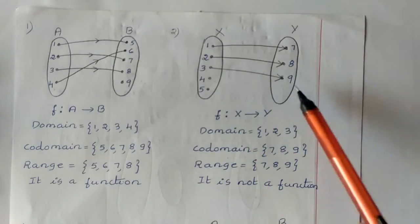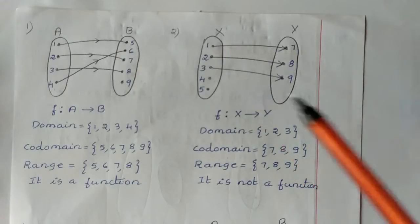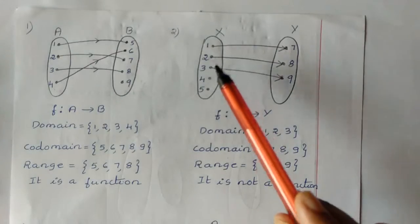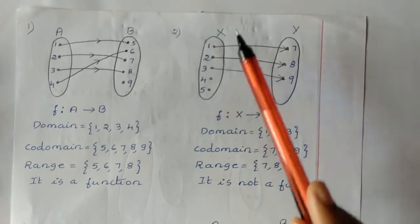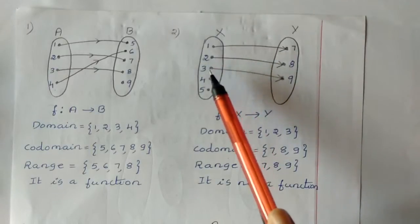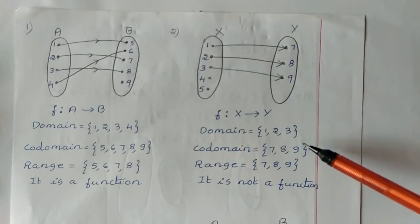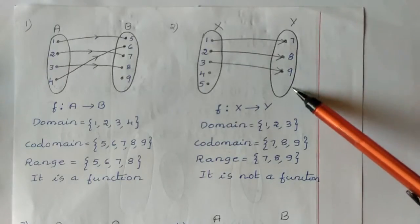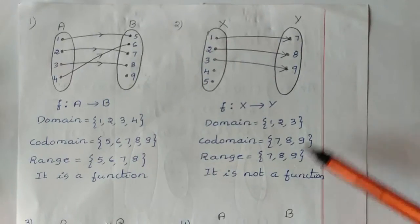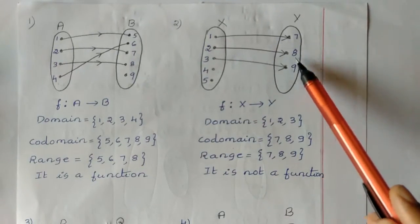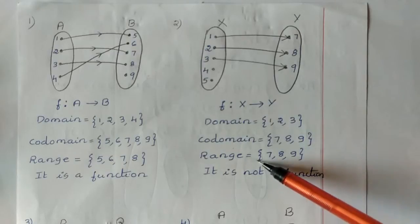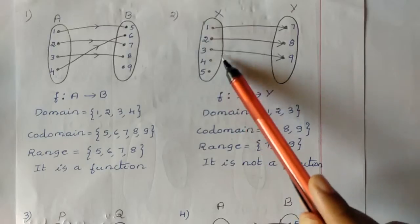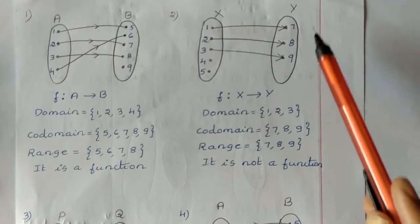For domain, co-domain and range in this case: the domain is {1, 2, 3} — only three elements participated in the mapping. The co-domain is all elements of the second set: {7, 8, 9}. The range is also {7, 8, 9} since all elements of Y are mapped. So co-domain and range are equal here, but this is not a function because elements 4 and 5 have no image in the Y set.